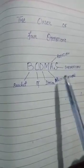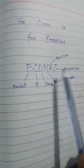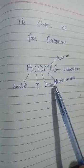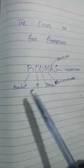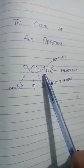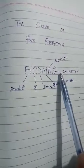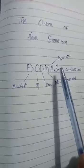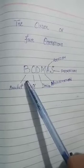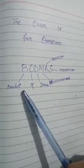If an expression has two, three, or more operators, then first we have to solve division, then multiplication, then addition and subtraction. And if an expression has brackets, then we will solve the brackets first.